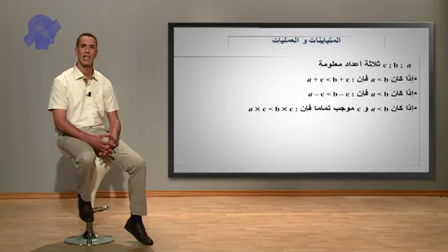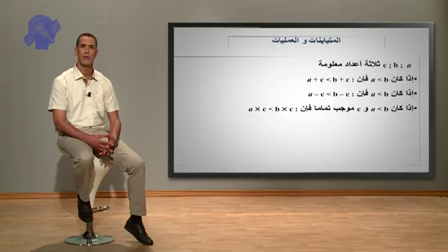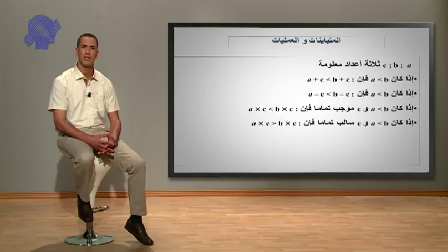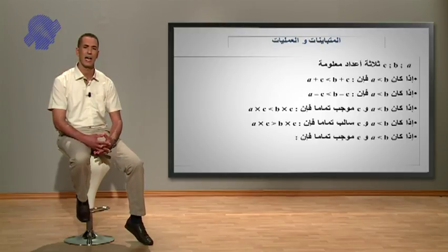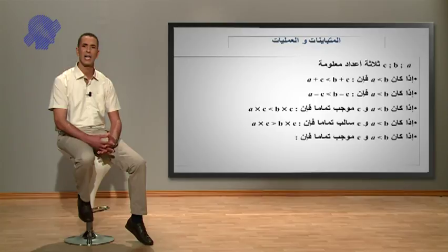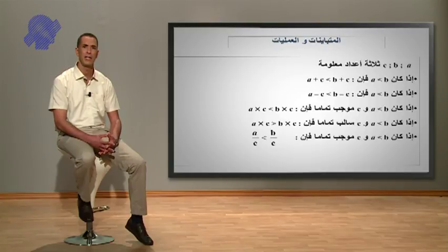إذا كان A أصغر من B و C عدد موجب تماما، فإن A في C أصغر من B في C. إذا كان A أصغر من B و C عدد سالب تماما، فإن A في C أكبر من B في C - الترتيب كان أصغر أصبح أكبر. إذا كان A أصغر من B و C موجب تماما فإن A على C أصغر من B على C.